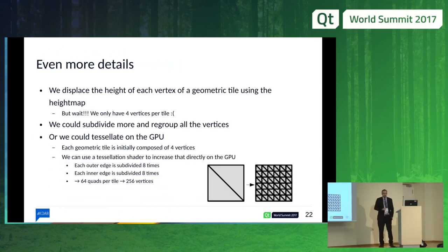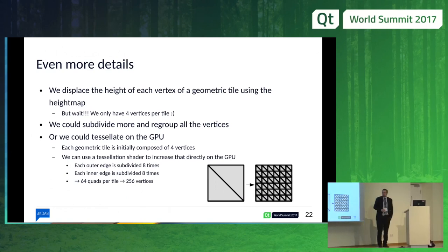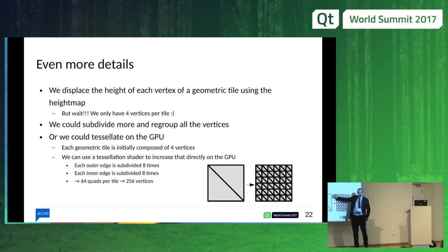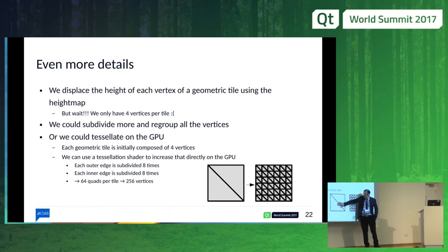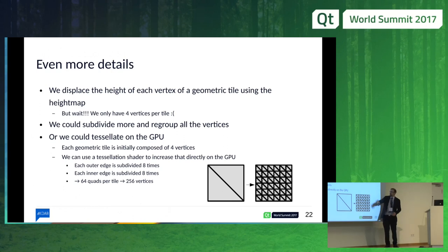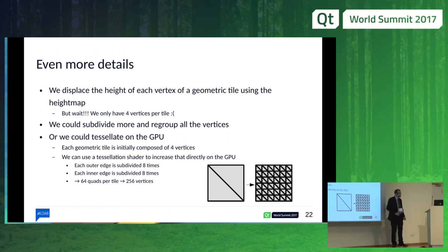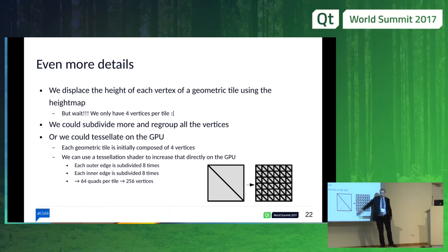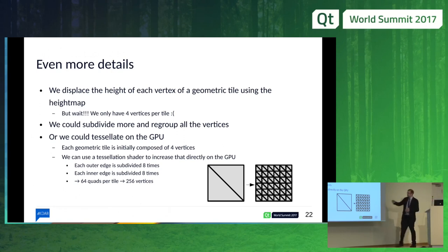We have a small problem: for each node we've been generating only four corners. So if we look up elevation only for those four corners, all the area in between won't be covered. We need to add more vertices per node. We could subdivide more on the CPU, or we can use tessellation shaders on the GPU to subdivide our quads into a given number of sub-quads. You just specify how many subdivisions should be made on the outer and inner edges, and you get a much finer grid, which should give us nicer elevation at render time.